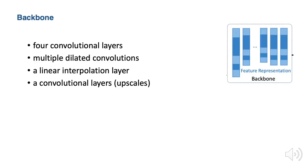Our backbone module learns video representations and is comprised of the following sequential modules. The input sequence is passed through four convolutional layers, which reduce the sequence temporal resolution for computation efficiency. Then a layer of multiple dilated convolutions with different dilation rates aggregates temporal information from different scales. Afterwards, a linear interpolation layer followed by a convolutional layer upscales the temporal resolution back.